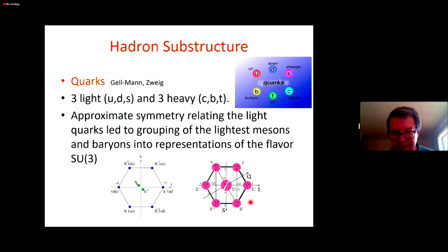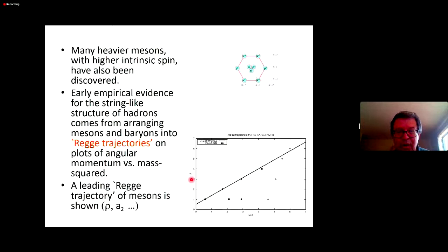Okay, then as time went on, more and more heavy mesons were discovered. So for example, this is a multiplet of vector mesons, which includes the rho, the omega, and so on. And perhaps the earliest empirical evidence for string-like structure of hadrons came from arranging them into so-called Regge trajectories, where one plots the angular momentum versus mass squared. And the leading Regge trajectory looks approximately linear up to sufficiently high spin. And then these additional dots here, the displaced dots, correspond to... So we'll see that these are like rotational excitations of the quark and antiquark connected by a kind of flux tube. And these contain additional vibrational excitations. So the leading Regge trajectory is that of rho, A2, and so on.